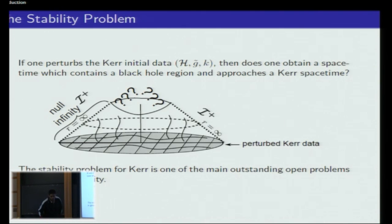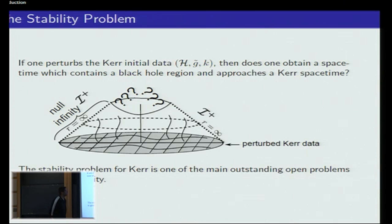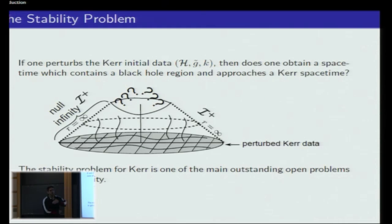One aspect of the problem is whether a perturbation of a black hole will still yield a black hole. Another aspect is understanding what happens inside the black hole — in particular, whether perturbations lead to singularities or not.